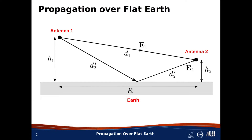As we have discussed in a previous lesson, transmitting antennas generate spherical waves. So Antenna 1 is creating a spherical wave, and therefore we expect that the power density of the wave emanating from Antenna 1 follows the inverse square law. For example, power density in the direction of Antenna 2 is proportional to 1 over d sub 1 squared. Equivalently, we say that the spreading loss is proportional to 1 over d sub 1 squared.